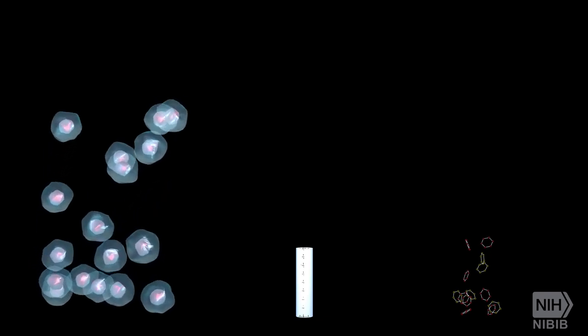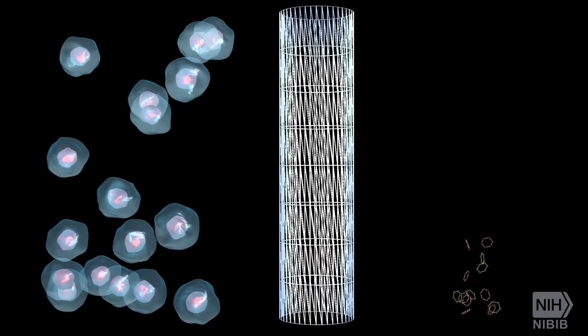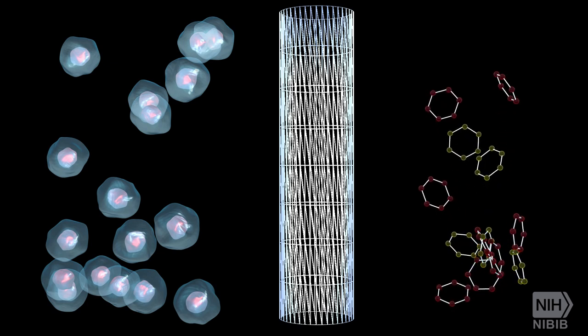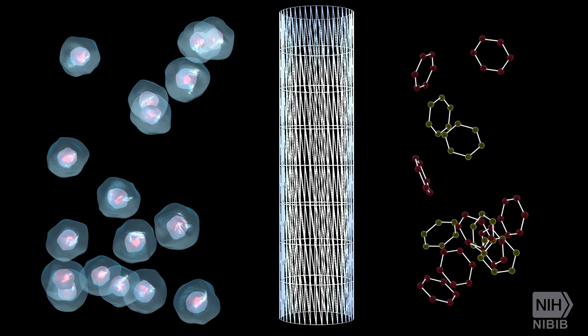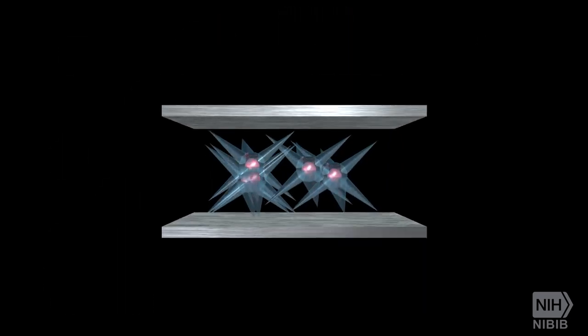Tissue engineering relies on four important factors: the right cells to do the job, the right environment such as a scaffold to support the cells, the right biomolecules like growth factors to make those cells healthy and productive, and physical and mechanical forces to influence the development of the cells.